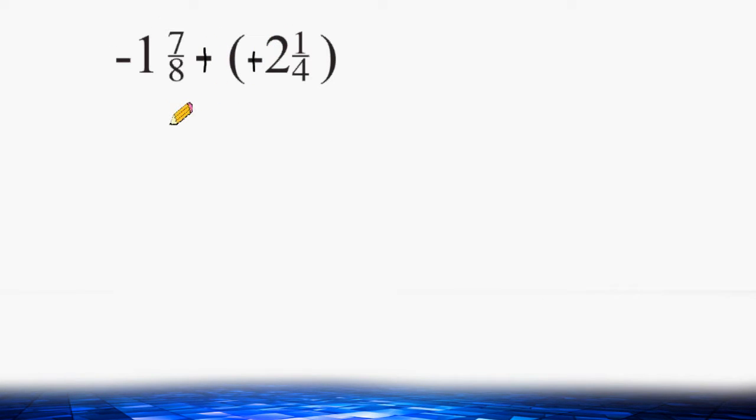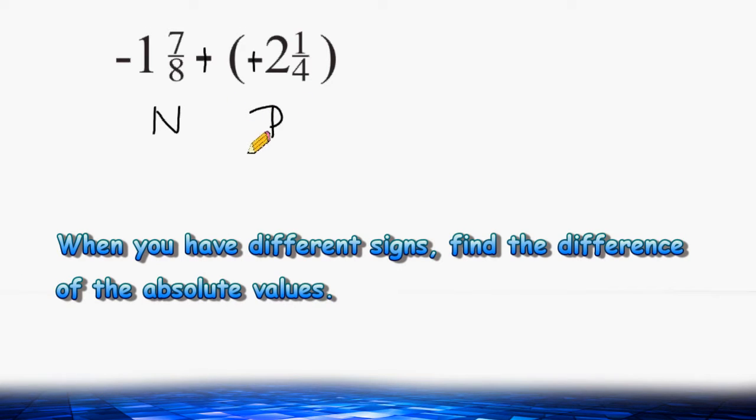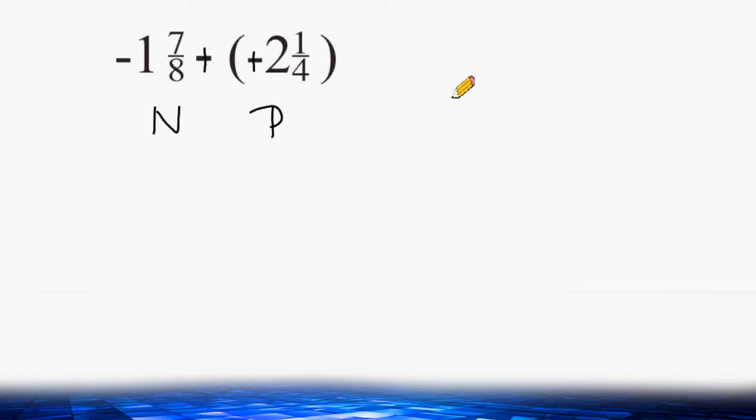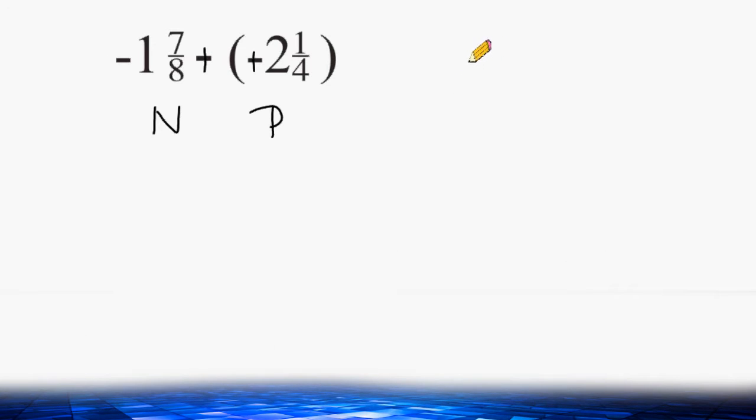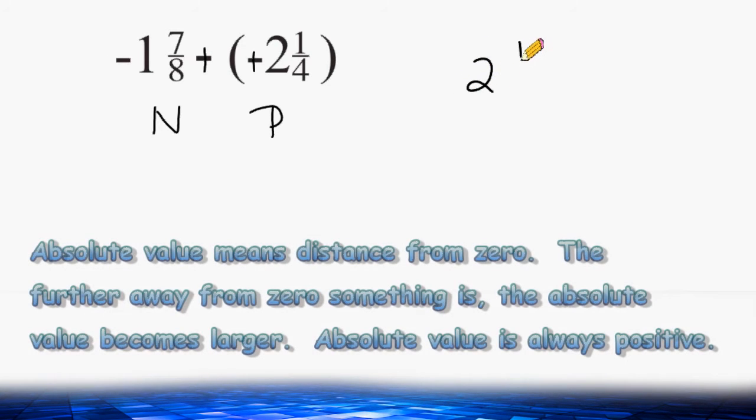So now what we have is a negative mixed number and a positive mixed number. When the signs are different, you should find the difference of the number's absolute values. Let's take the larger absolute value and place that on top and the smaller absolute value on the bottom and subtract those.